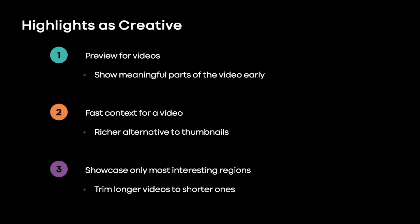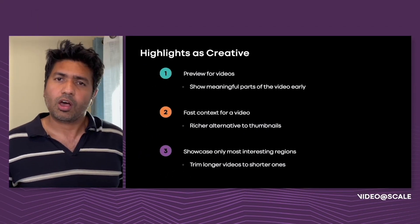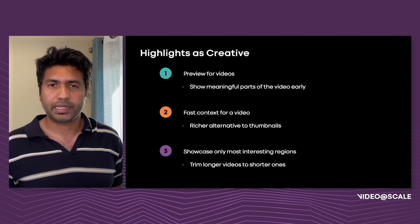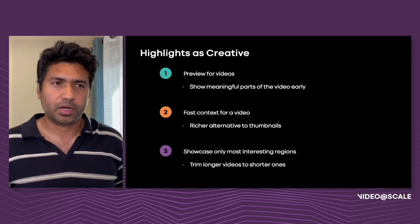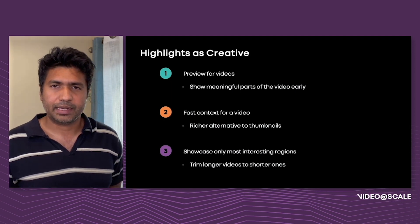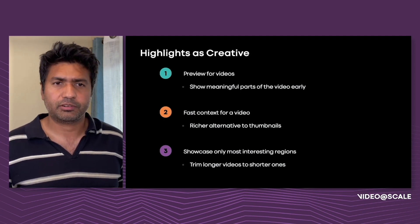One such application is to create previews highlighting the interesting regions. This helps provide a sneak peek into the video's most engaging regions and can help users determine whether a video is likely to be enjoyable. We can also use the interestingness signal to help content producers make their content more engaging by removing parts that don't contribute meaningfully, helping them edit their videos to capture user attention better.